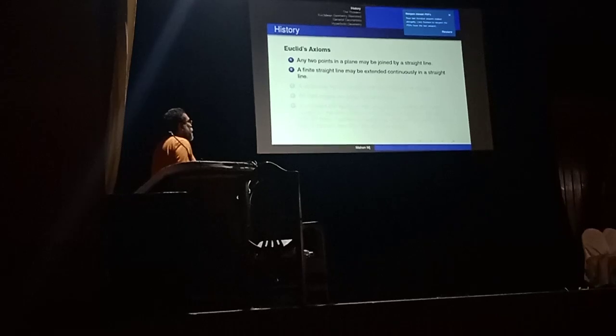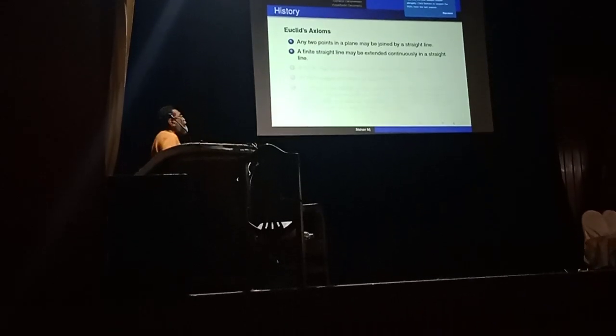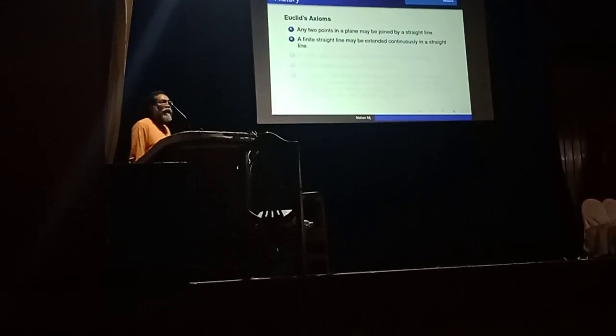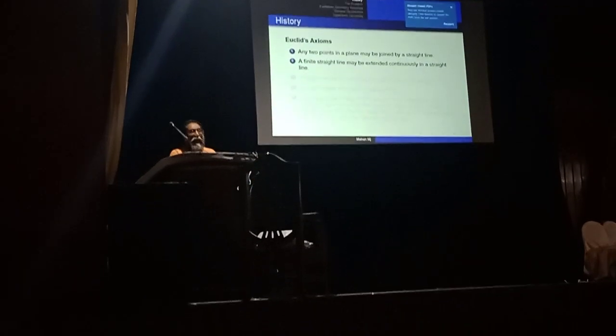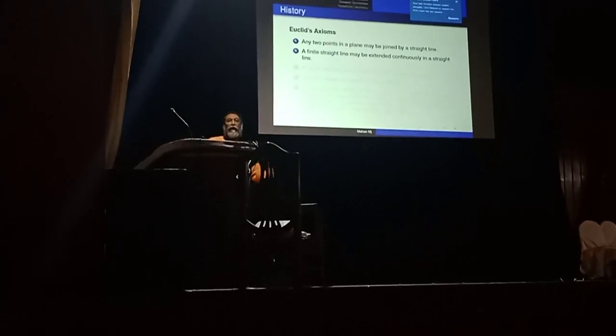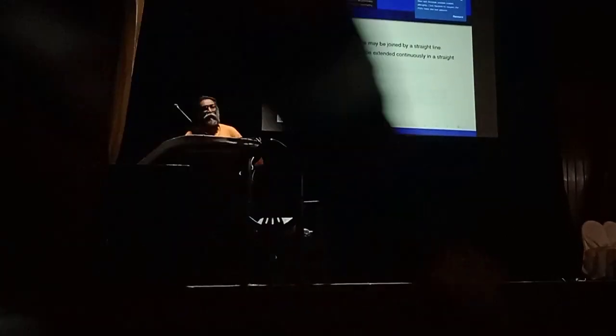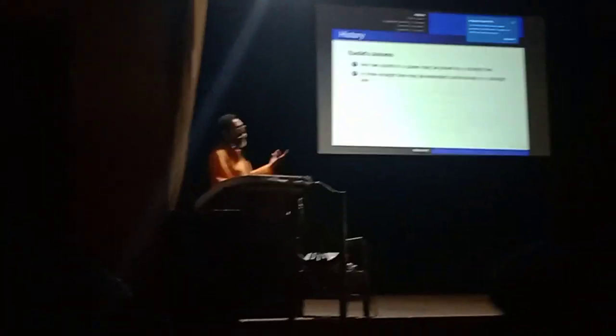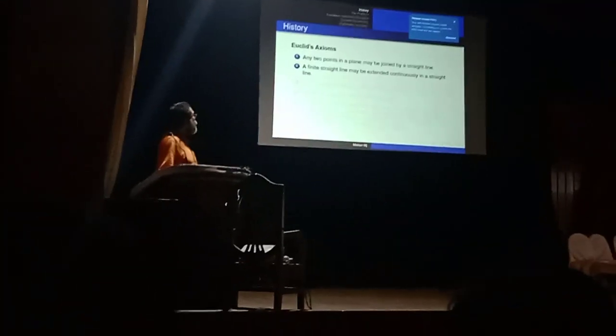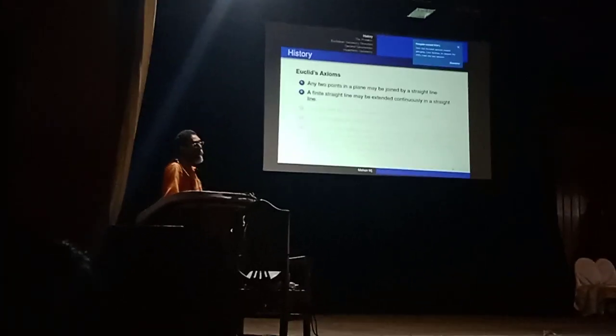The second axiom says that a finite straight line — that means a straight line segment, which has been introduced by the first axiom as a player in the game — can be extended infinitely in both directions. So the second axiom really introduces another player in the game, also called a biinfinite straight line. So we now have two players: straight line segments and biinfinite straight lines.